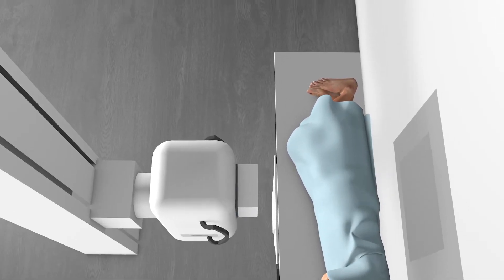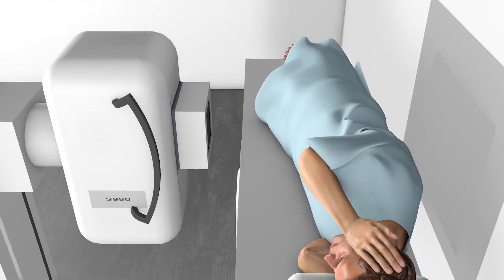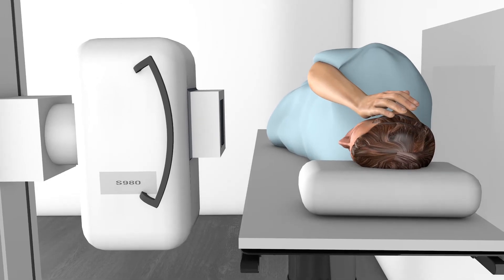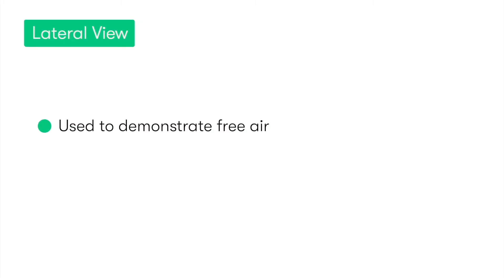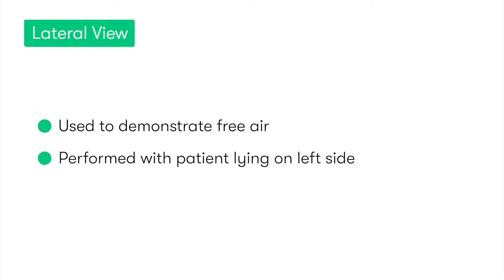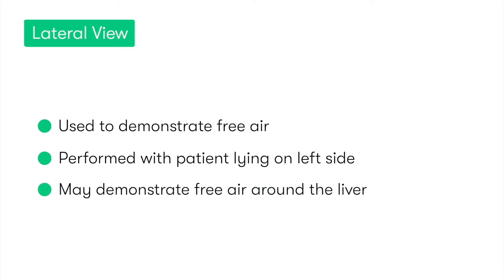The final abdominal x-ray view is the lateral view, or lateral decubitus, which basically means that the patient is lying down on their side as the image is taken. Traditionally, the lateral decubitus view would be obtained to try and demonstrate the presence of any free abdominal air, which would indicate a gastrointestinal perforation. Therefore, most commonly the x-ray would be taken with the patient lying on their left side, so that any free air would rise and thus be more easily visible around the contrasting liver.